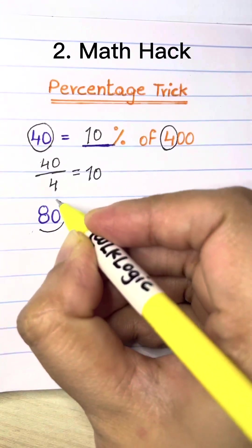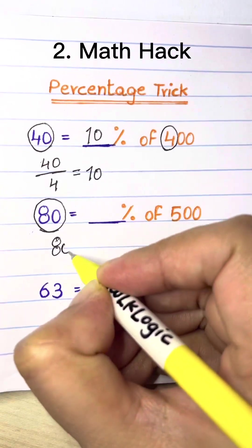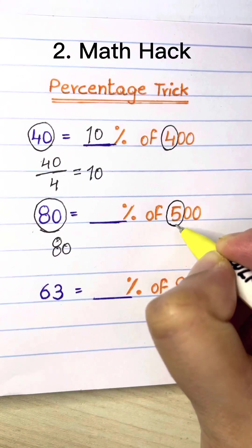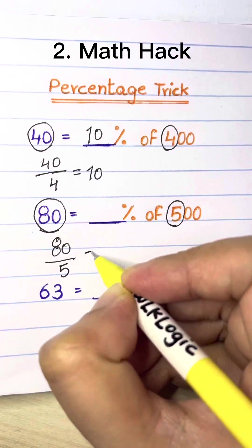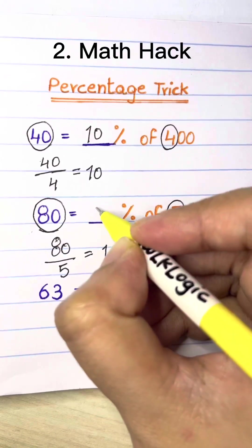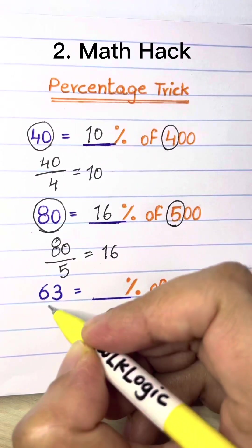80 is what percent of 500? Just take 80 divided by 5. That gives you 16. So 80 is 16% of 500.